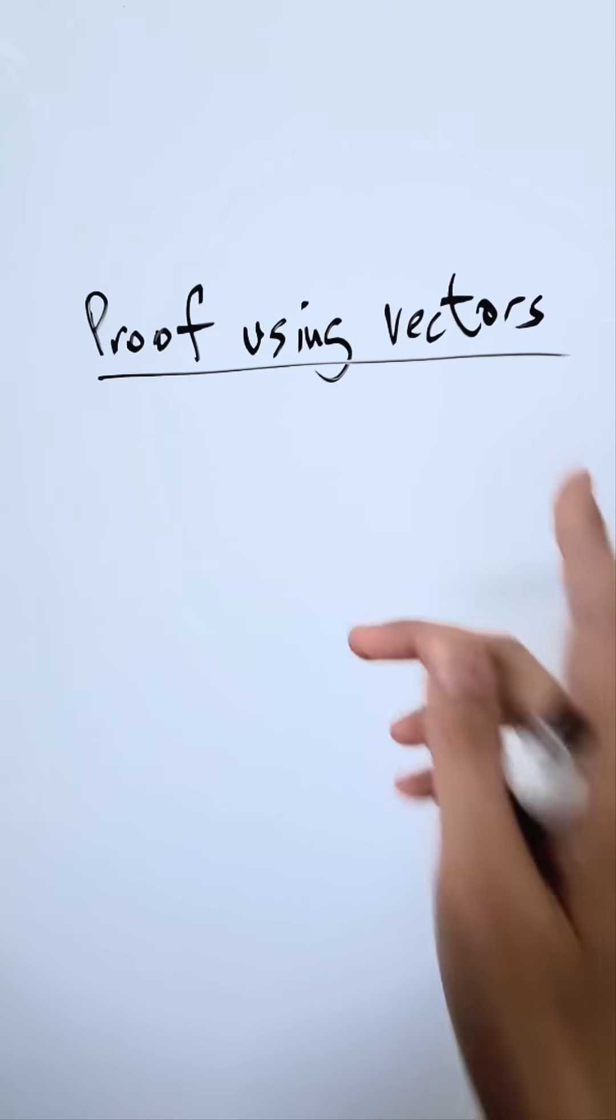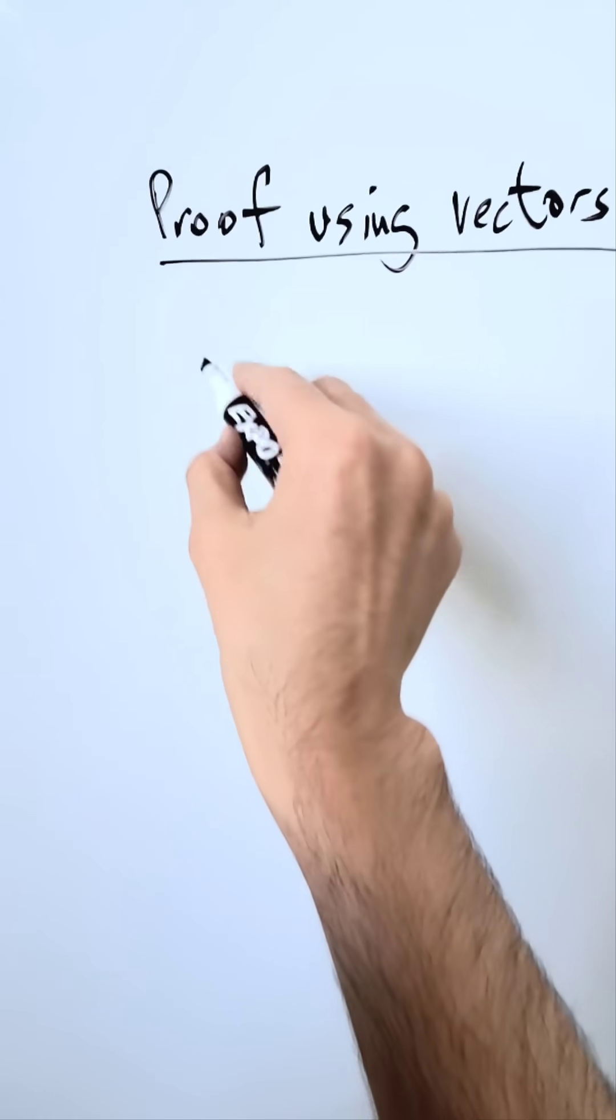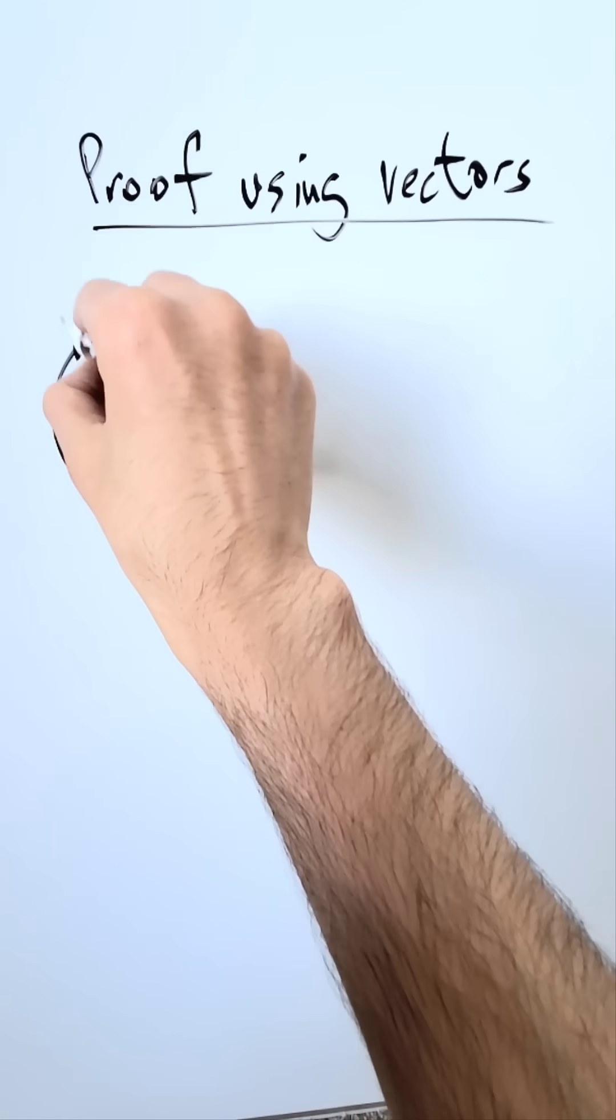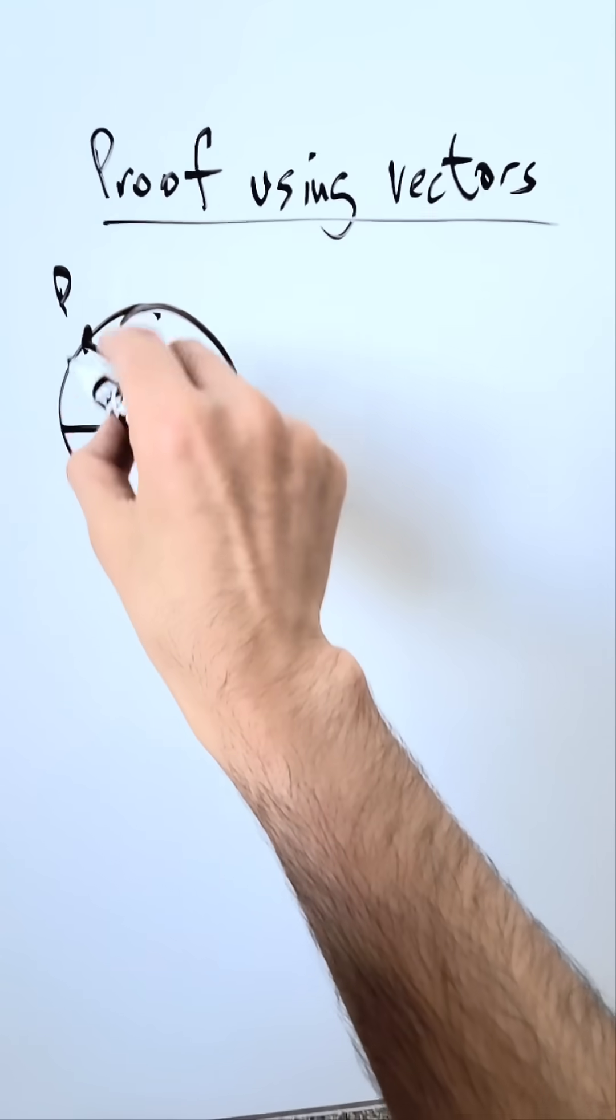Let's examine an interesting proof but we'll use vectors to do so. What is this? I have a circle here with a center and a diameter.